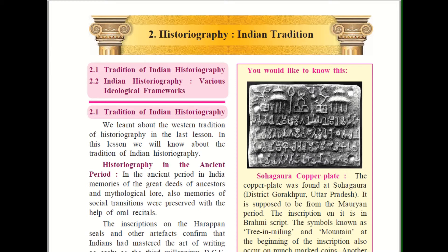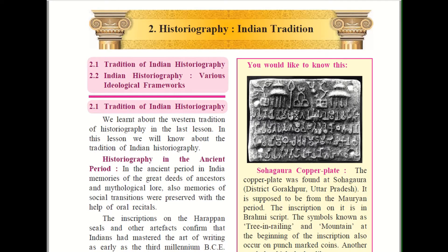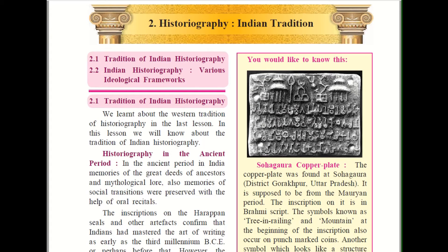Which are the three periods? The ancient period, which deals with inscriptions on rocks and stone pillars. The medieval period, influenced by the Persian style of writing by the Mughals and Bakhars. And the modern period, written by the British about India. So all these three periods we are going to discuss.